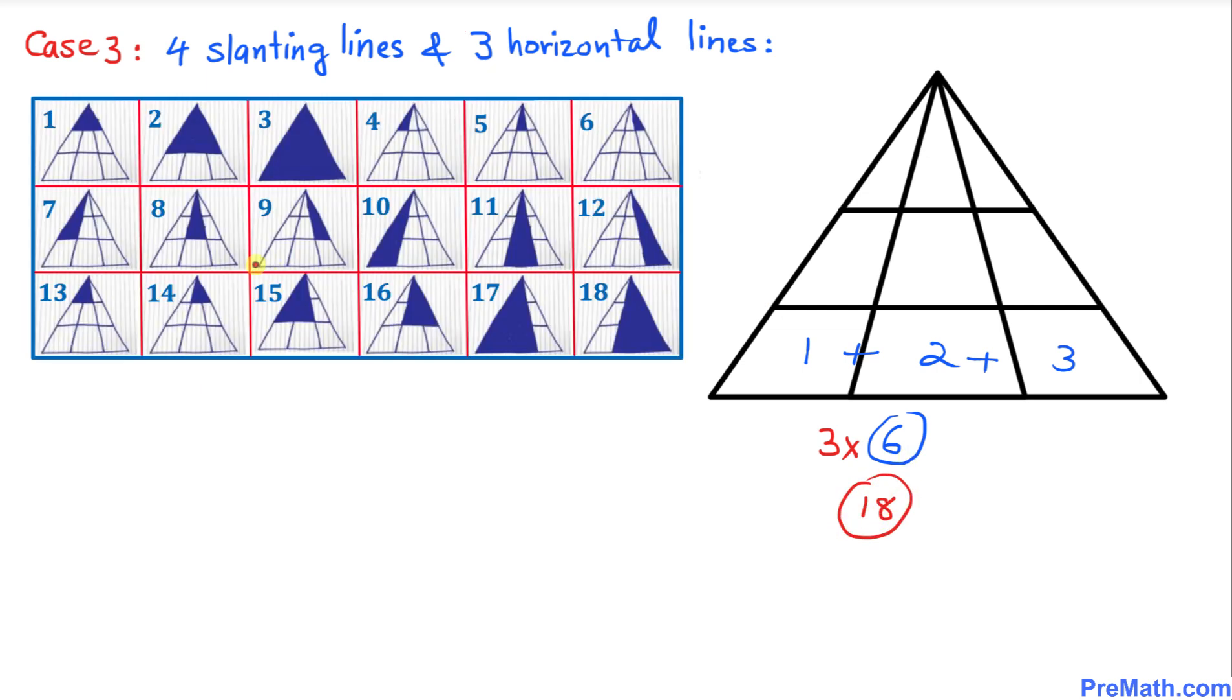Here is our visual representation of this shape. We can see that there are 18 different possible triangles for this given shape. Thus there are 18 triangles possible in this shape.